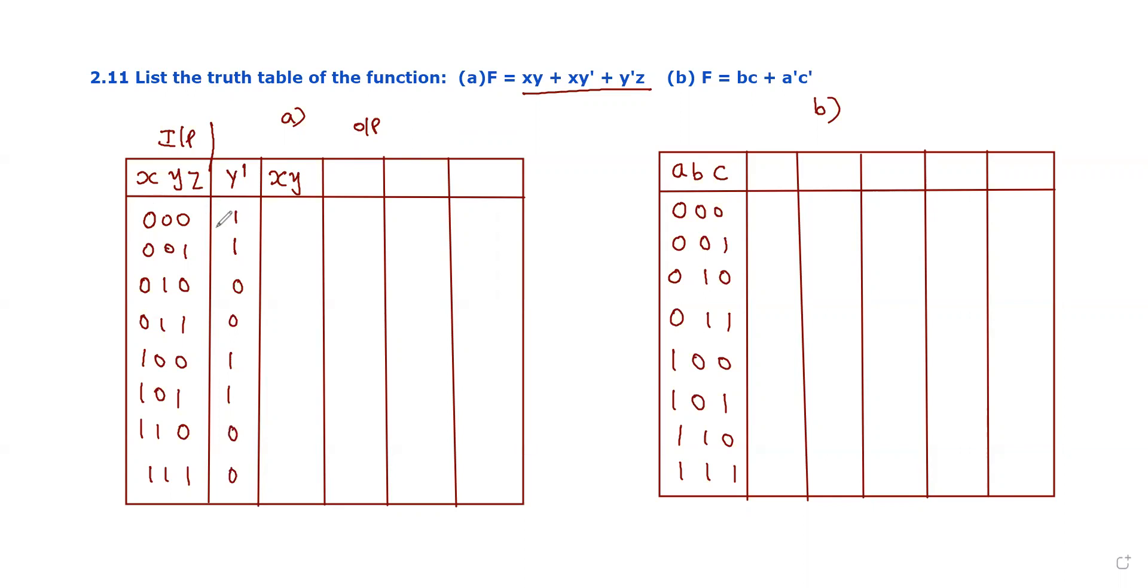With the AND operation, if any input is 0, the output is 0. All inputs must be 1 for the output to be 1. So for xy: 0, 0, 0, 0, 0, 0, 1, 1. Since both are 1, we get 1, 1.